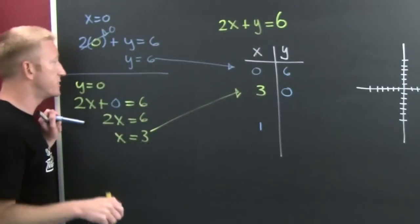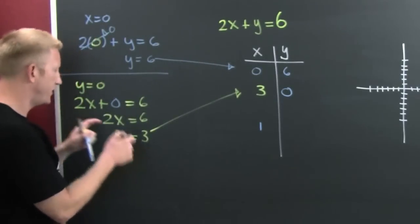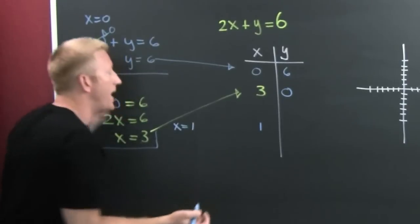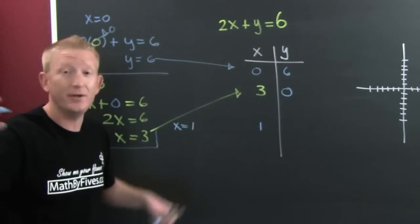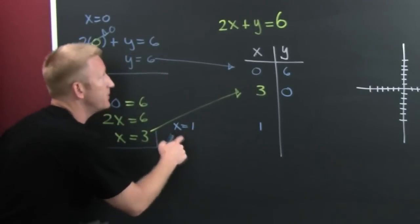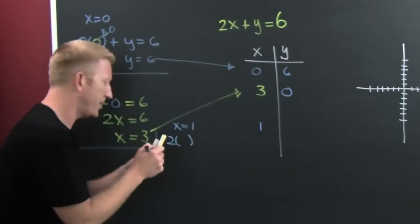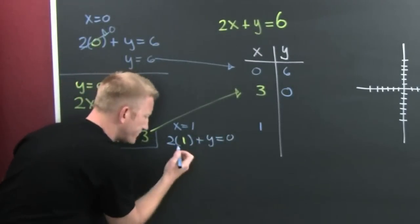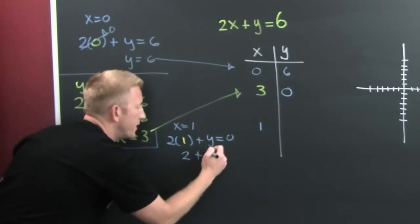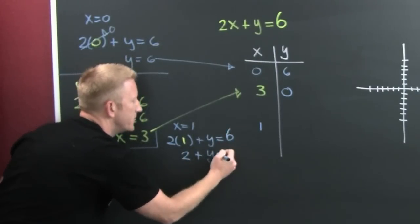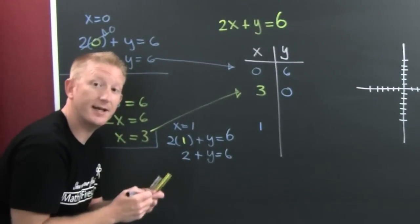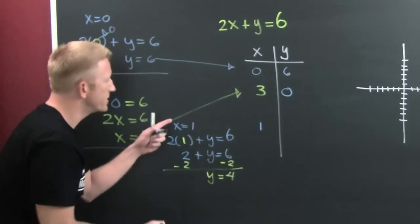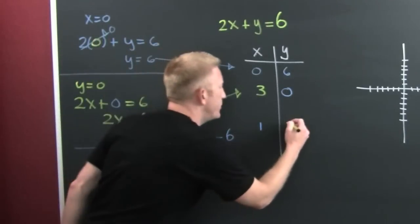One more point. Let's put X equals one. I could have chosen anything — I even gave you freedom of choice — but I chose it for you. Let X equal one and plug it in: two times one plus Y equals six. That's two plus Y equals six. Subtract two from both sides, and Y turns out to be four. So when X is one, Y is four — put that point there.